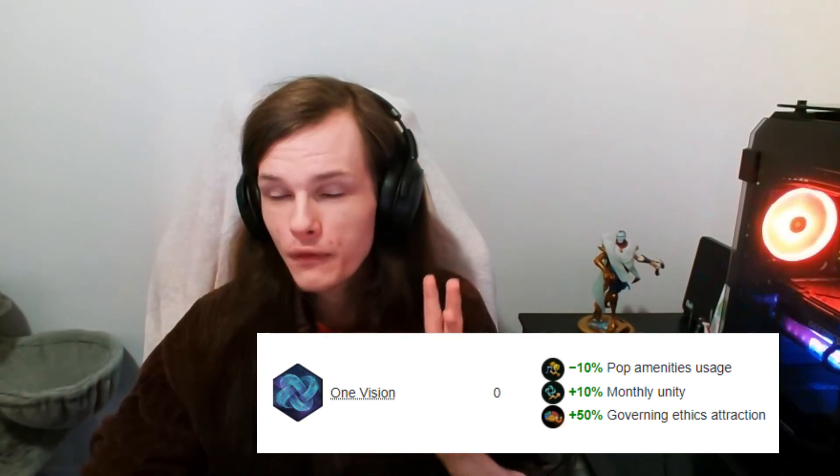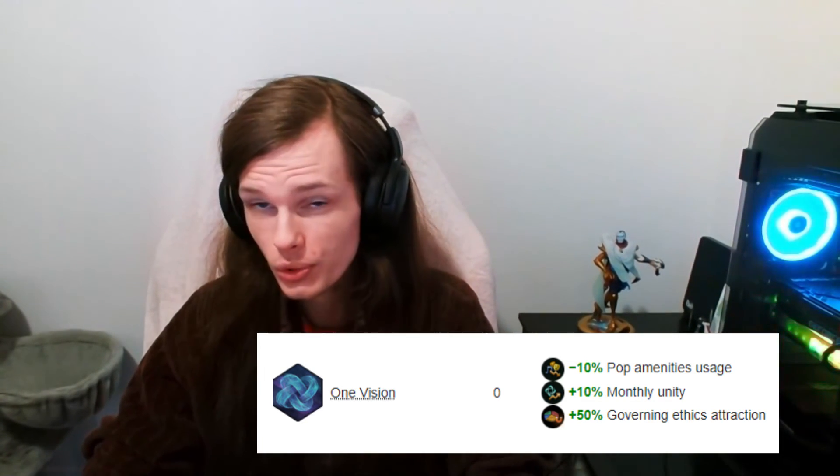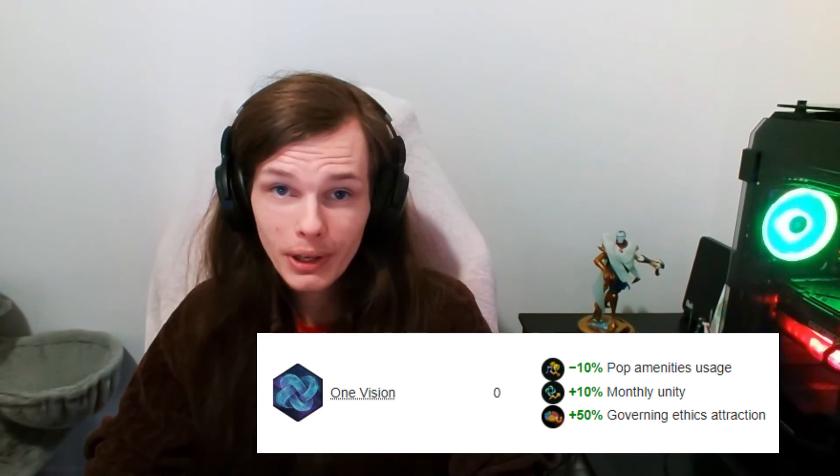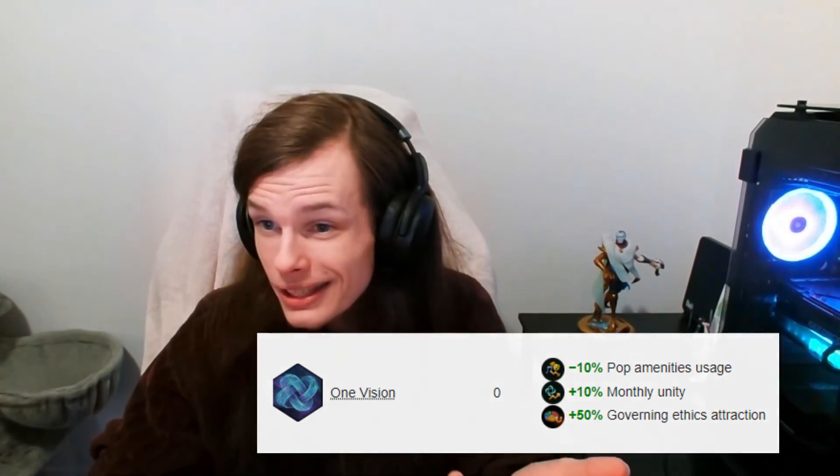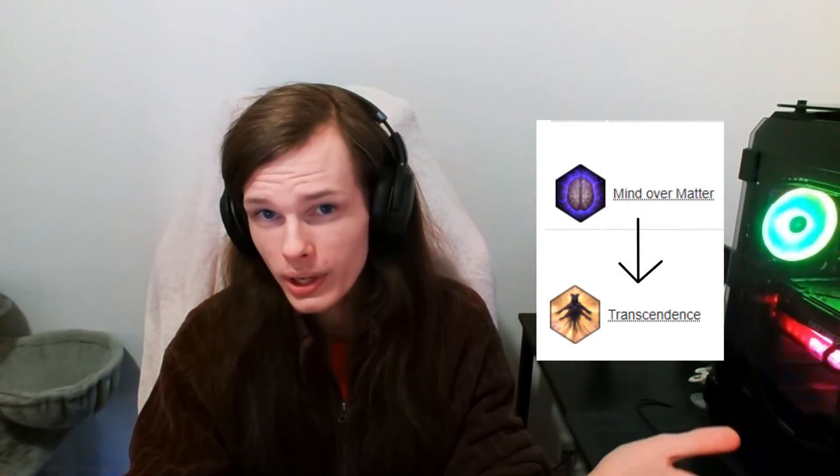One Vision is an ascension perk I take quite often — it gives plus fifty percent governing ethics attraction, plus ten percent monthly Unity, and lowers amenity usage by ten percent empire-wide. I mostly pick it for the governing ethics attraction to stop my empire from drifting toward unintended ethics. And if you want the Psi-Corps and those telepath jobs, you'll need to go through the psionics path — Mind Over Matter into Transcendence — which lets you touch the Shroud, but that's a whole other topic for another day.